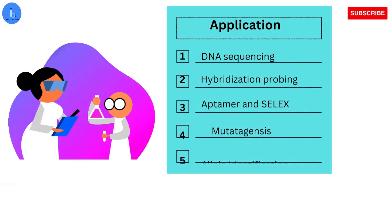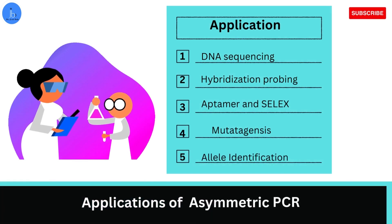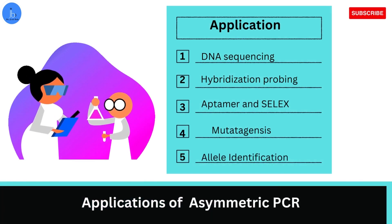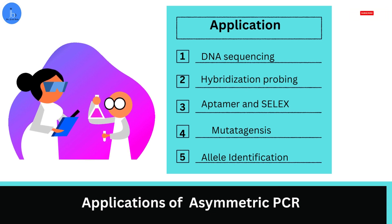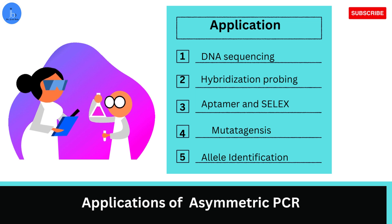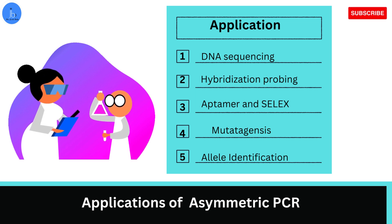There are various molecular downstream exclusive applications of asymmetrical PCR, such as in sequencing, hybridization, selection, aptamer technology — especially in DNA aptamer selection — site-directed mutagenesis, also in allele discrimination and in the identification of various alleles.